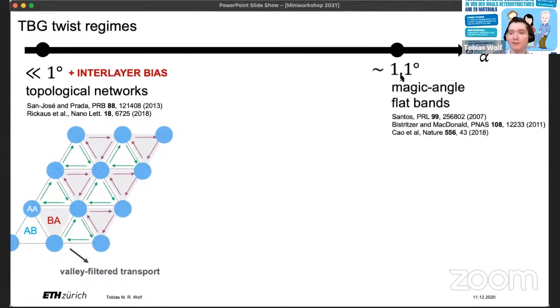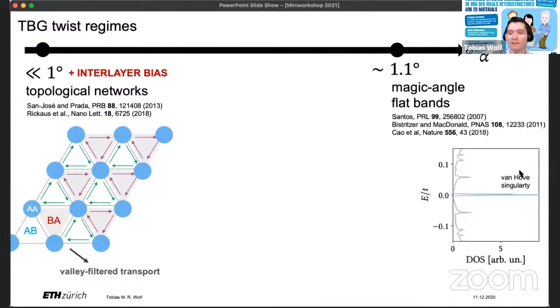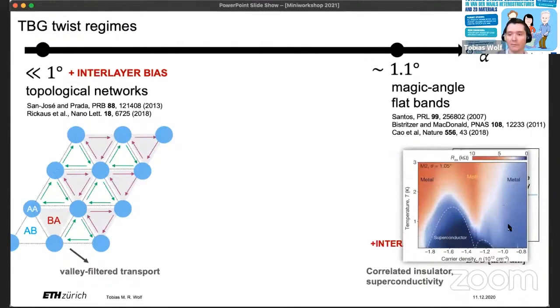If you go to somewhat larger angles, of course, we get another extremely famous regime, namely, the magic angle flat band regime, which has a van Hove singularity in the density of states. And of course, when we get interactions, we get all sorts of strongly correlated behavior, correlated insulating states and even superconductivity. So here I show this original phase diagram, temperature versus carrier density. And we see that if we are at the right filling and we decrease temperature, we can have strongly correlated states. Of course, now it's known that this includes strongly correlated insulators and down to superconductivity.